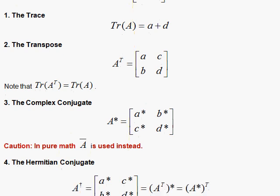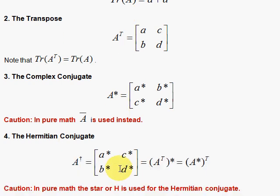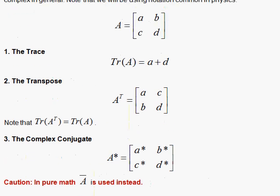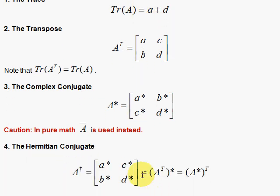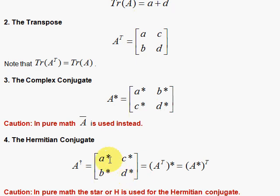The Hermitian conjugate is next, and that is obtained by first doing the star of everything, the complex conjugate, and then doing a transpose, or vice versa, doing the transpose first and doing the star. So let's look at this here. If you take the transpose, you swap B and C, so we swap B and C, and then we star everything. Or we can star everything and then swap B and C.